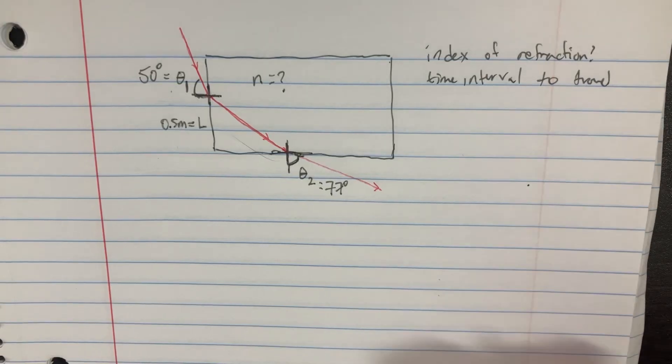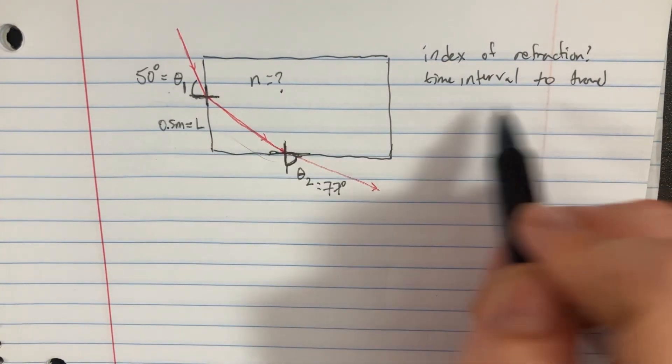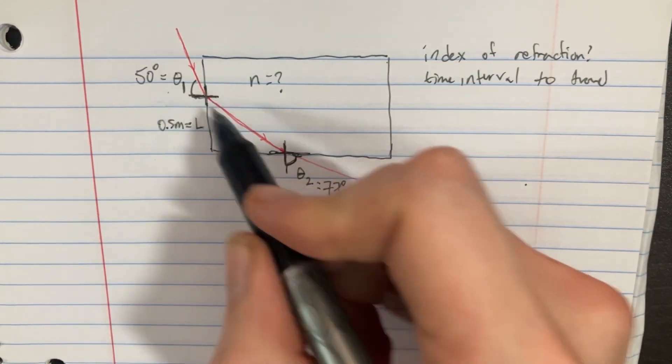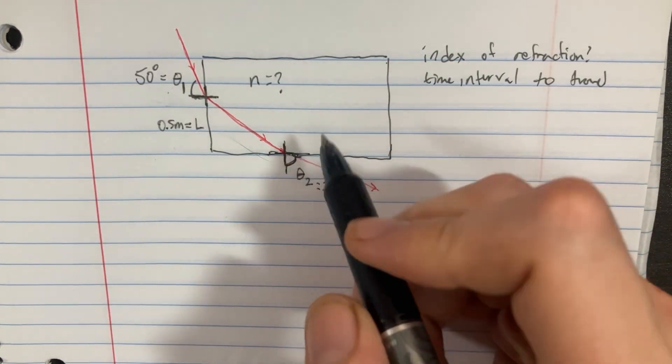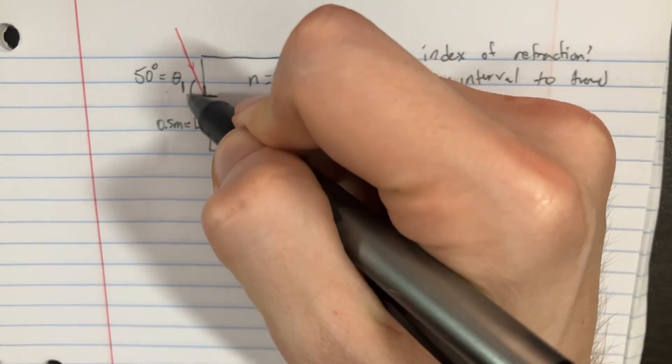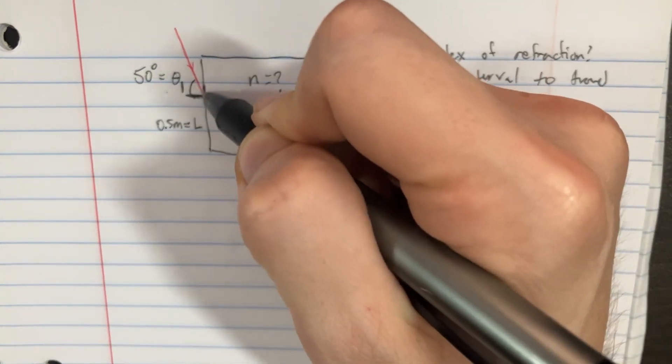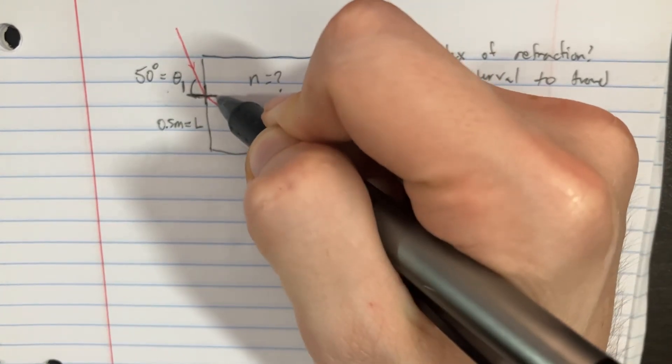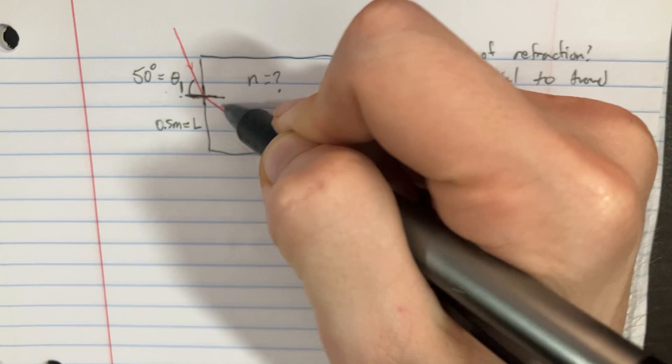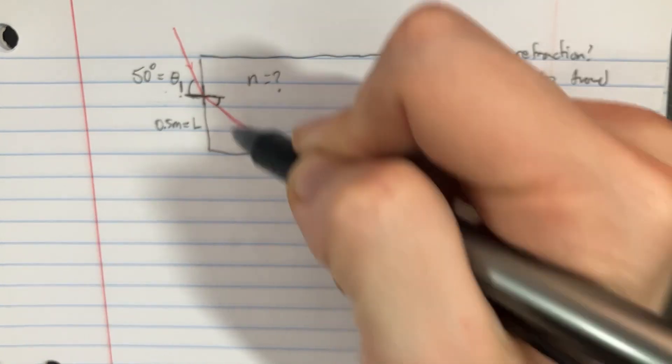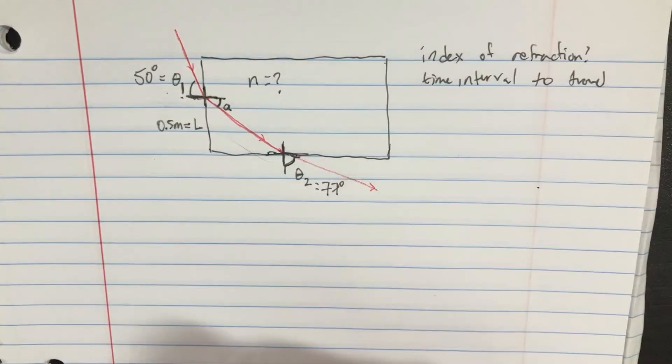We're trying to find the index of refraction of this block and the time interval to travel if we have this light ray that passes through it. By looking at this particular information, we can see we have this angle, so if these are the normals, then we would also be able to figure out this angle from this information. We call it angle A.